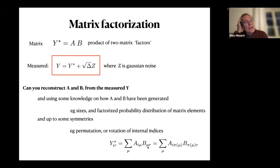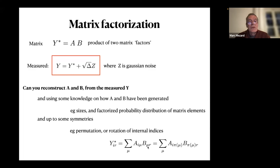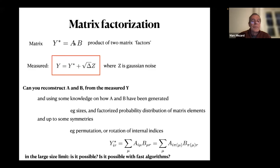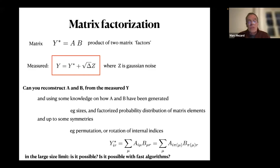Why is this an interesting problem? First, it's a natural mathematical problem — you generalize the factorization of integers into products, now to matrices. It also has very practical motivations. The kind of question I want to ask is, in the large size limit — large matrices — is it possible at all to recover the factors knowing a noisy measurement? That's the information-theoretic question: up to what level of noise delta is it possible to recover the factors? And the second question is algorithmic: do there exist polynomial-time algorithms able to do it?